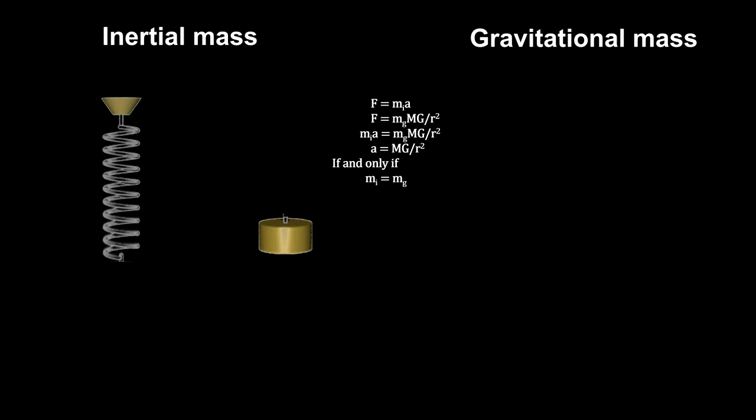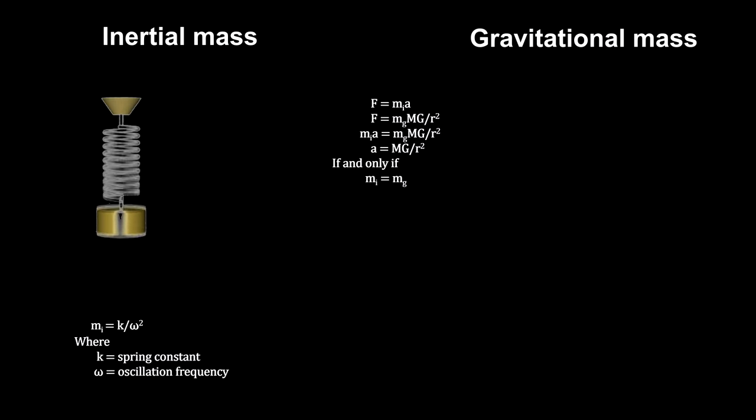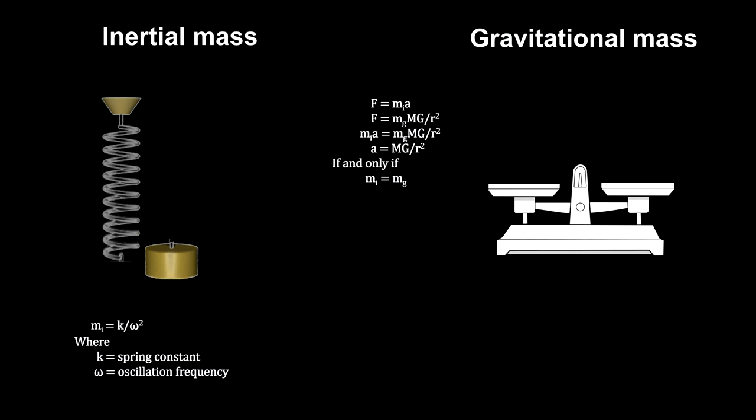Typically, inertial mass is measured by using a spring with a known spring constant. The mass is attached to the end of the spring, and the spring is stretched, released, and allowed to oscillate freely. Counting the angular frequency, we can calculate the inertial mass.